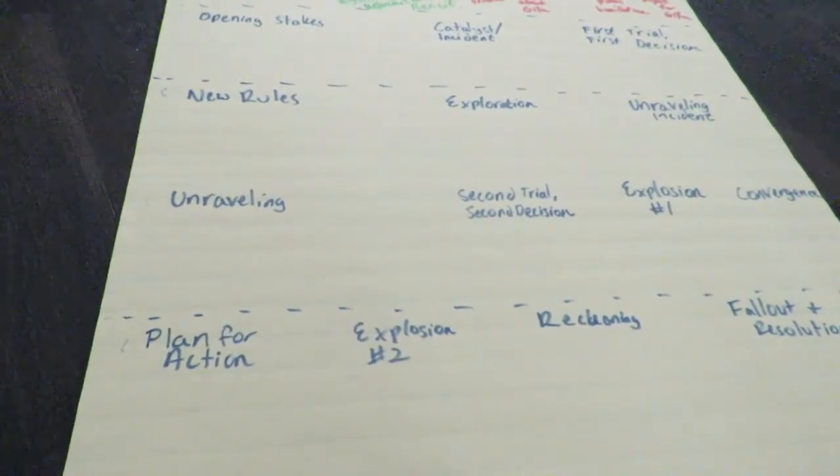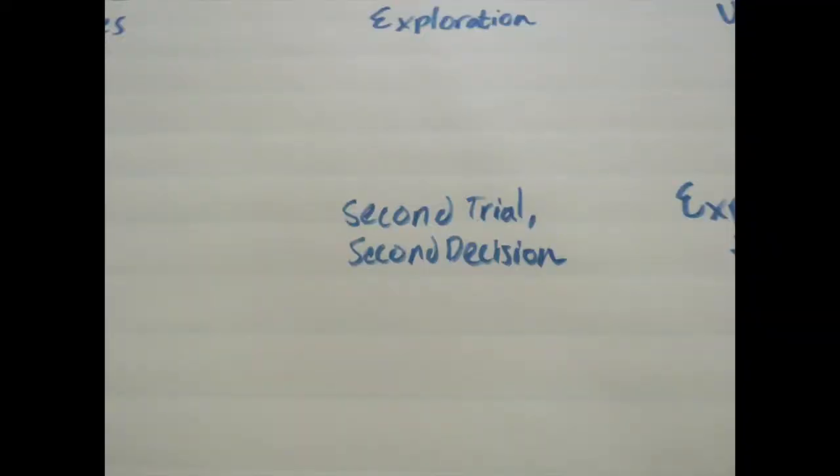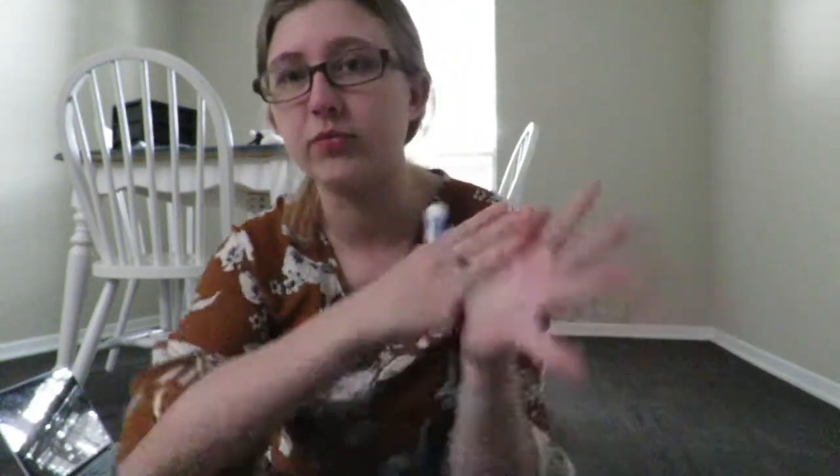Or it could be the opposite: a character thinks everything is going wrong and they discover some twist that allows them to start planning towards what comes next. This is kind of a transition period between act 2A and act 2B. Immediately after the unraveling incident comes the unraveling — a long period of layout of the consequences of the unraveling incident. And at the end of that you get the next big point, which is the second trial, second decision. As the unraveling is happening faster, the protagonist has to make a decision to stop it or go forward with the plan they've been bringing forth this whole time.